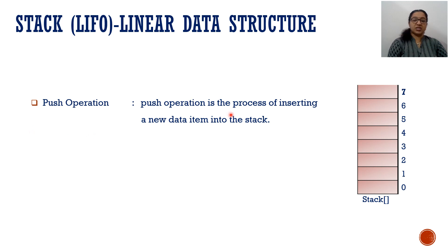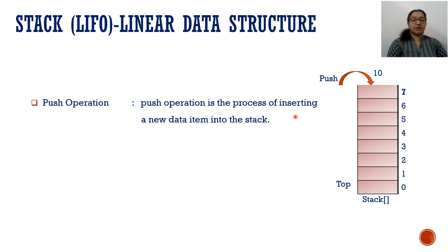Push operation is the process of inserting a new data item into the stack. Push function is used to insert an element in the array. Now see the array here — it's a normal array; I just put the name of the array as 'stack'. So 8 cells are there, index number 0 to 7. Now I want to insert an element, so we are calling the push function: push(10). 10 is the element we want to insert. Where will we insert it? In which position? See where top is now — top is on the 0th position, so we will insert it on the 0th position.